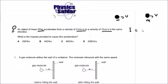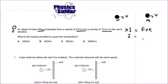The equation for impulse is force times time, but in this question we don't have force or time, so we cannot use that equation. Let's use the next equation: impulse equals change in momentum. The change in momentum is written as mass times (final velocity minus initial velocity).